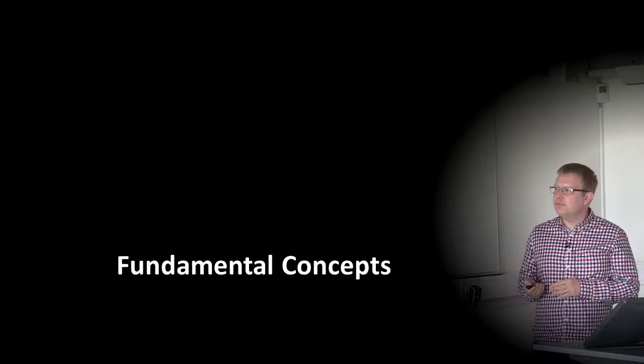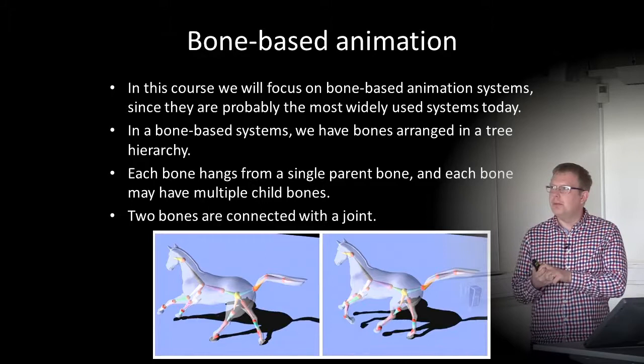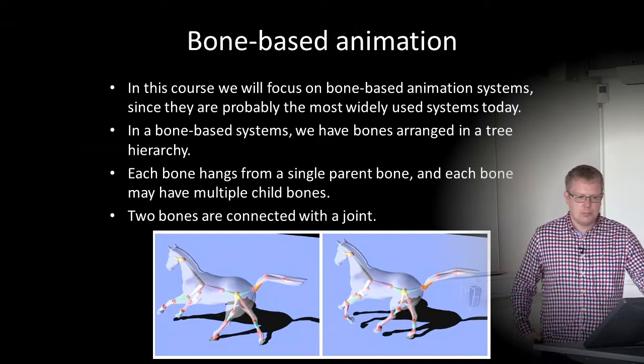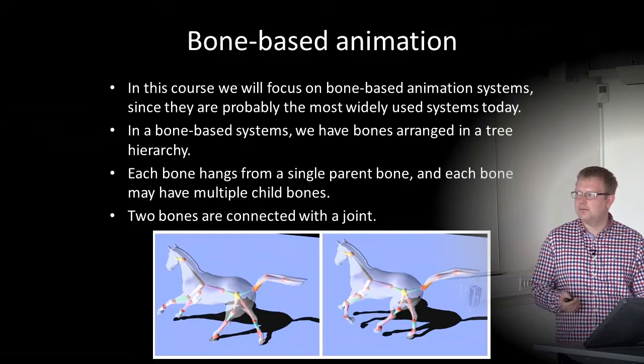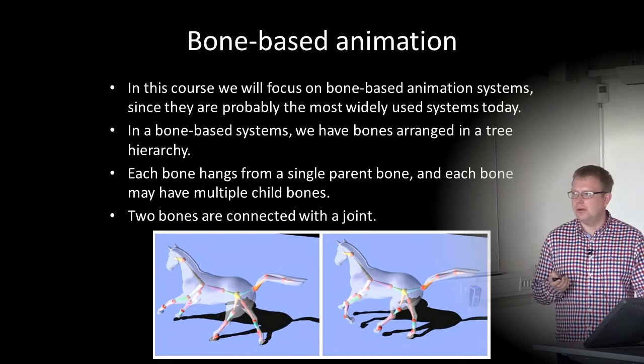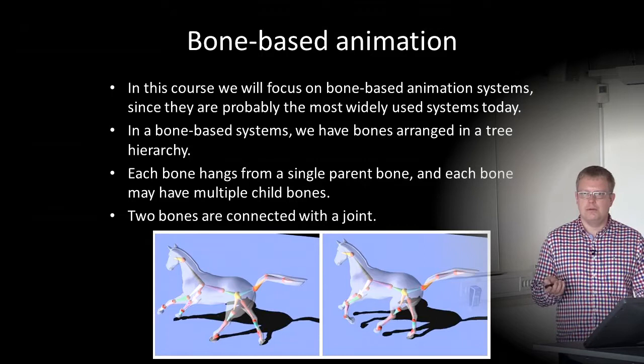First, some fundamental concepts regarding animation. We typically use a bone-based animation — that's our focus for this course, and it's probably one of the most widely used systems today. In a bone-based system, bones are arranged in a tree hierarchy. Each bone hangs from a single parent bone and may have multiple child bones. The first bone up in the hierarchy is called the root bone. Two bones are connected with a joint, and the joint can move with or without restrictions.